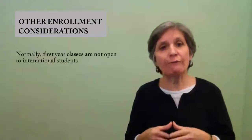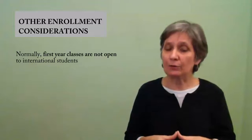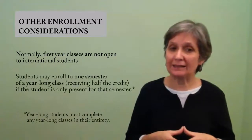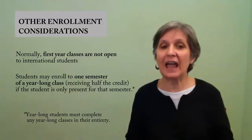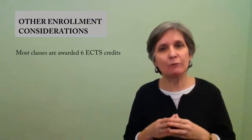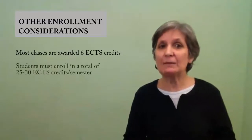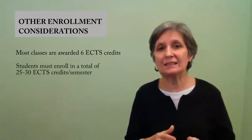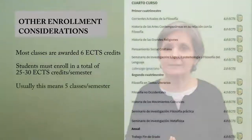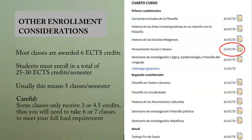You need to also know that first year classes are not open to visiting foreign students. However, students can register for year-long classes, attending only one semester and receiving half of the credits assigned. Speaking of credits, most classes receive between 5 or 6 European credits, also known as ECTS credits. Students must take between 25 and 30 ECTS credits, which usually means 5 classes. However, be aware that a few classes only receive 3 credits, and if you take these, your course load may have to go up to 6 or 7 classes a semester.